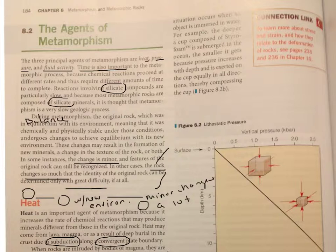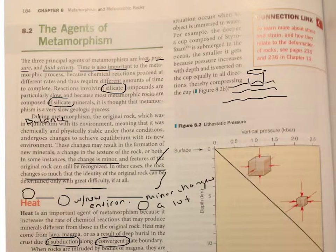A similar situation occurs when an object is immersed in water. For example, the deeper a cup composed of styrofoam is submerged in the ocean, the smaller it gets, because pressure increases with depth and is exerted on the cup equally in all directions, thereby compressing the cup. I think I can make a visual of that so I remember. I'm kind of picturing the cup, and then when it's in the ocean, as it becomes submerged deeper, the cup becomes smaller because of the pressure in all directions compressing the cup. That makes sense.